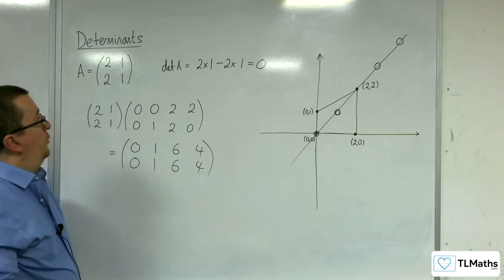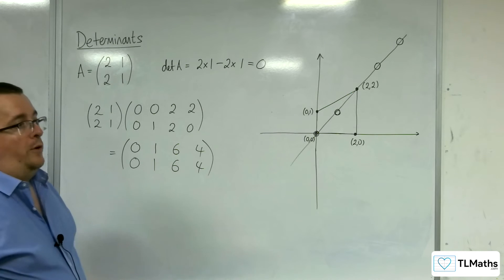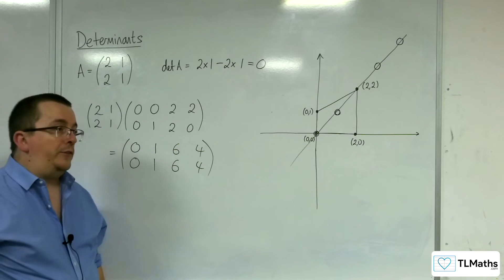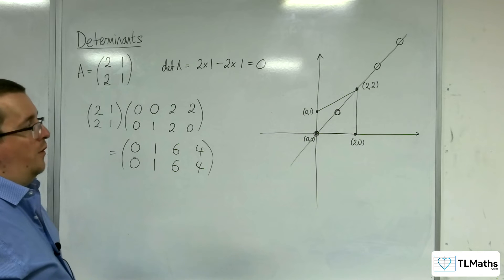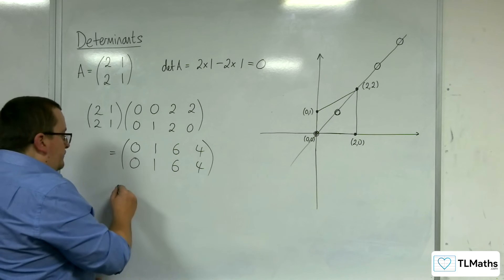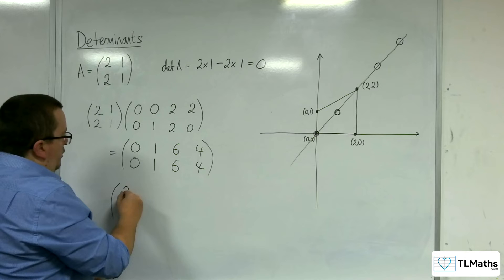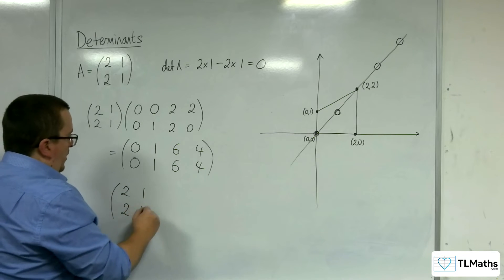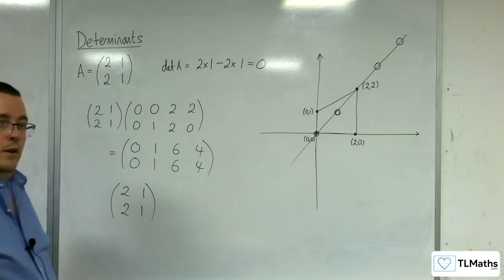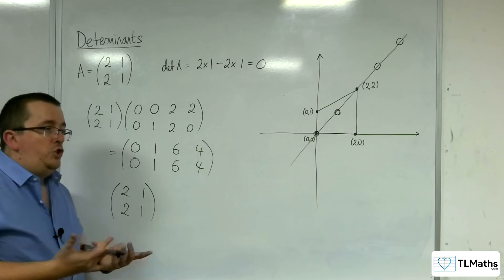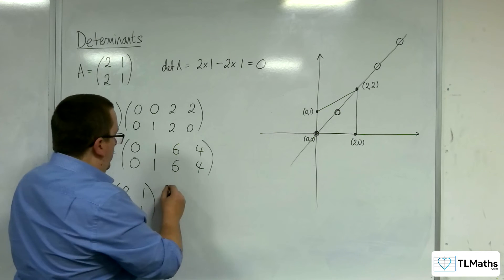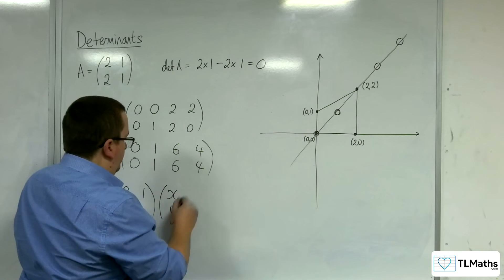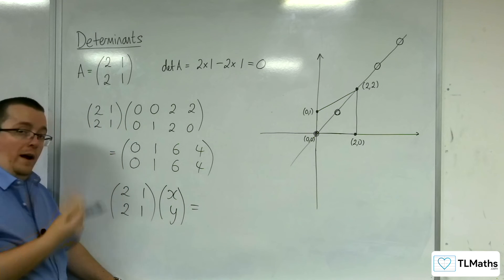Now, it's easy to also see that all those points lie on the line Y equals X. If you needed to work out what that line was, then what you can do is you can look at applying 2, 1, 2, 1 to a general set of coordinates, so X, Y, and just seeing what happens.